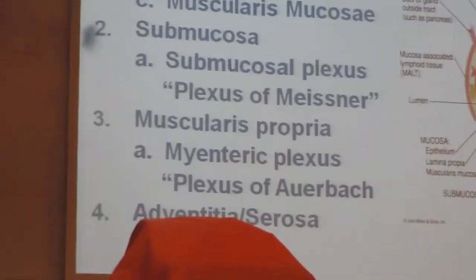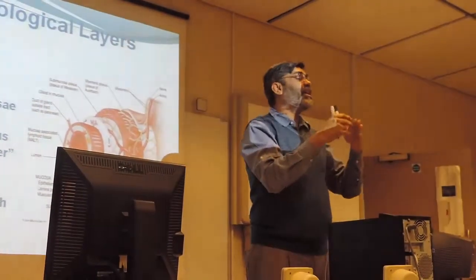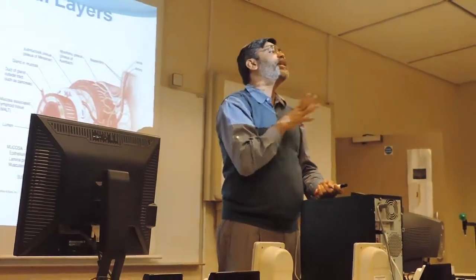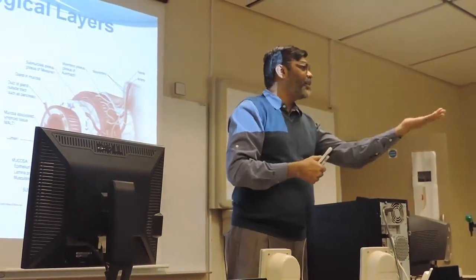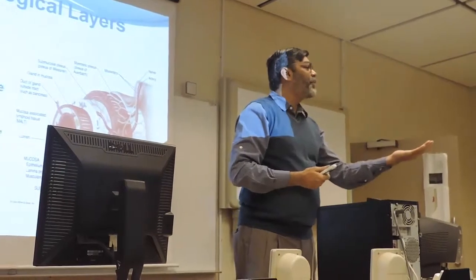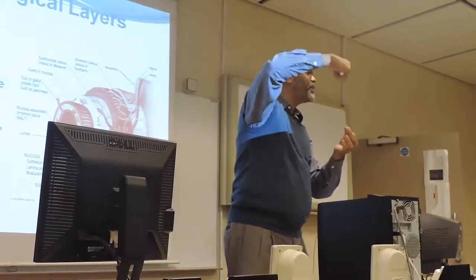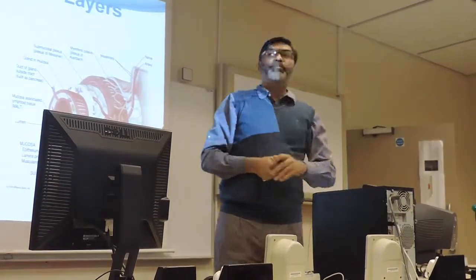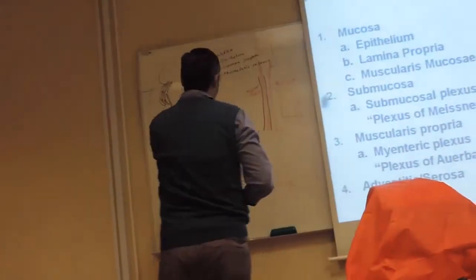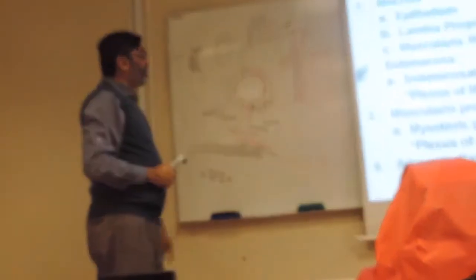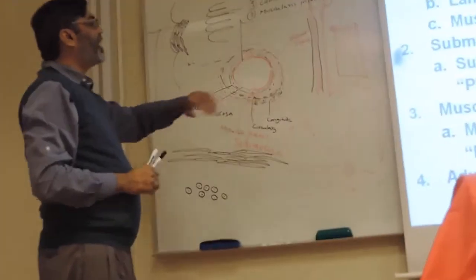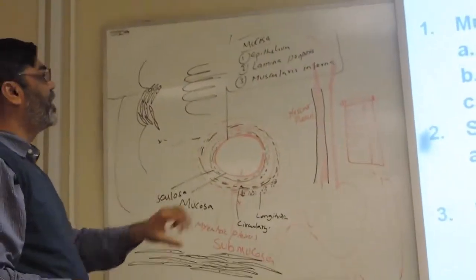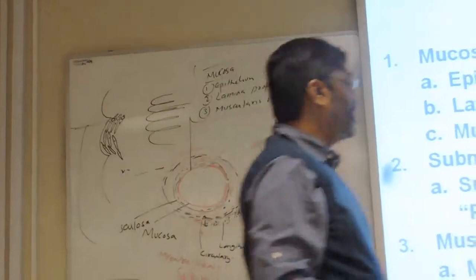The myenteric plexus supplies the muscles to drive contraction. The submucosal plexus supplies the mucous membrane and the glands, because for digestion we need secretion, and secretion needs a stimulus that comes through these nerves. So we have two nerve plexuses: one in the submucosa, and one within the musculosa called the myenteric plexus. This is the general structure of the whole GIT.